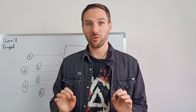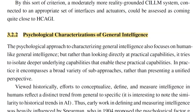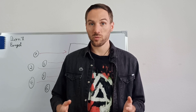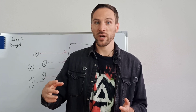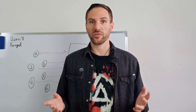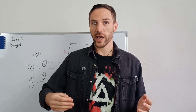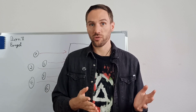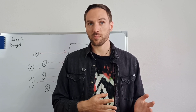Let's move on to psychological characterizations of general intelligence. The psychological approach also focuses on human-like general intelligence, but rather than looking directly at practical capabilities, it tries to isolate deeper underlying capabilities that enable those practical capabilities. This approach looks at what capabilities humans have that enable them to do complex tasks — it looks deeper at what human intelligence actually is, not just at the results.